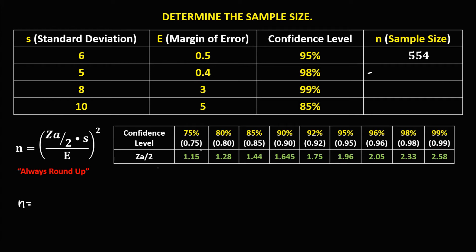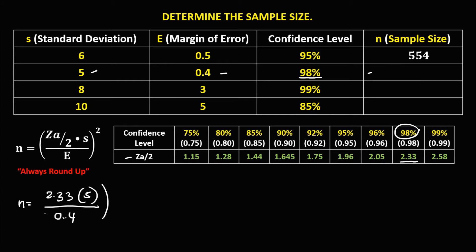For this given, n equals — the confidence level is 98%, and for 98% the confidence coefficient is 2.33. So we have 2.33 times the standard deviation, which is 5, over the margin of error, which is 0.4, then to the power 2.